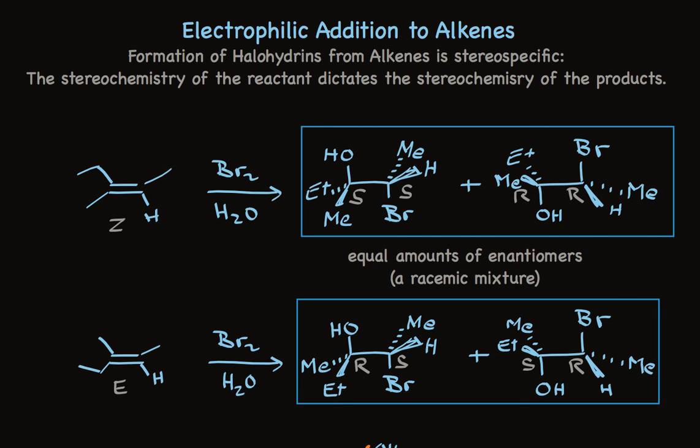In summary, the take-home message is that the formation of halohydrins is highly regioselective: the hydroxyl group adds to the more substituted carbon. And when the alkenes have E and Z stereochemistry, the reaction is stereospecific. Which pair of enantiomers results from each alkene is dictated by the anti-stereochemistry of the reaction mechanism. Halohydrin formation is both regioselective and stereospecific.